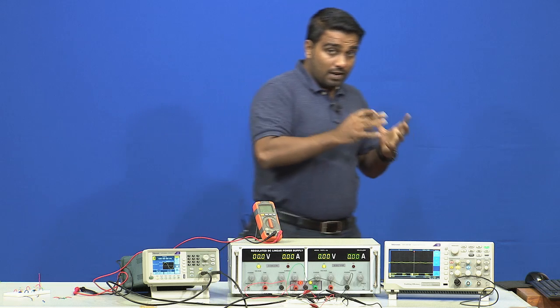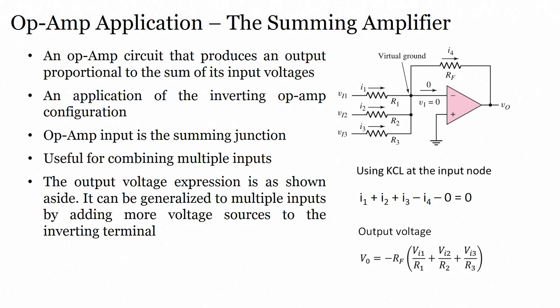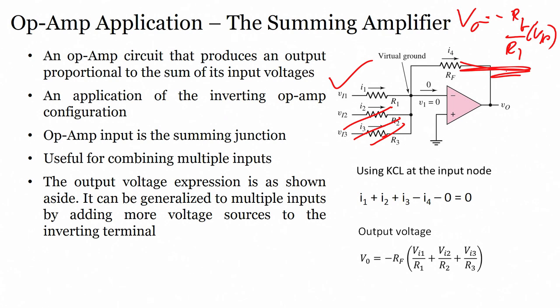Let us go on the screen and see what is the summing amplifier. If you see this particular circuit, if I remove one signal and just keep one input, it will be an inverting amplifier. With input and feedback resistor R_in and R_f, V_out equals minus R_f over R_1 into V_in. This is the formula for your inverting amplifier.